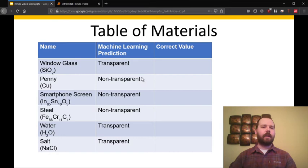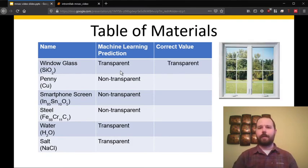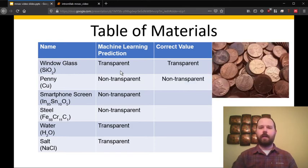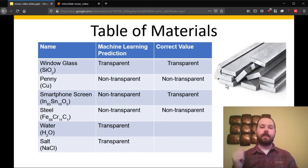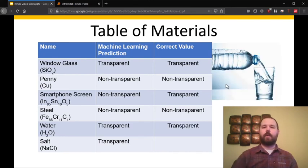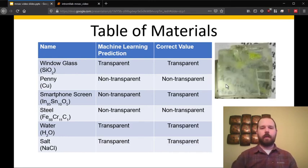So I've copied those back over here. We can see that it thought three of the materials were transparent and three of them are non-transparent. So let's compare it to what we would consider the correct values to be. So for the window glass we know that that's transparent so it's correct. The penny is non-transparent. The phone screen should be transparent because we need to see all the images that are beneath it. Steel would be non-transparent. Water would be transparent. And then salt would be transparent.